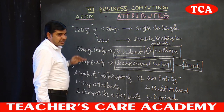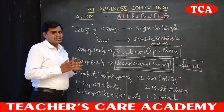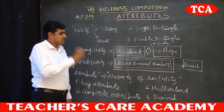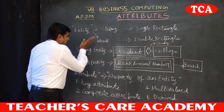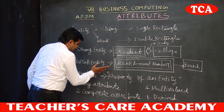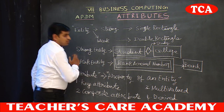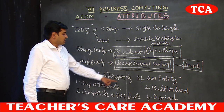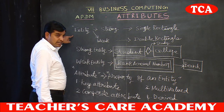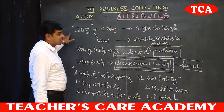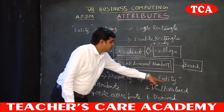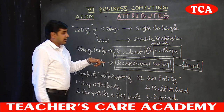In an entity, it has one identity, one status, one symbol. The entity maintains a relationship and characteristics — that is called the property of an entity. This property is called an attribute. An attribute is a property of an entity.